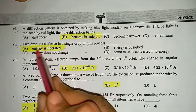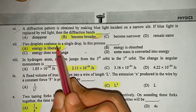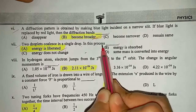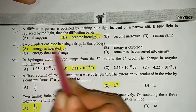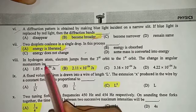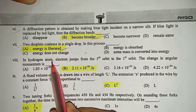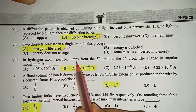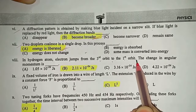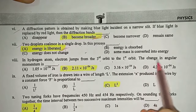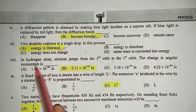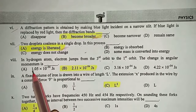Seventh: two droplets coalesce into a single drop — in this process the energy is liberated. Eighth: in a hydrogen atom, an electron jumps from the third orbit to the first orbit. The change in angular momentum — options are: A. 1.05×10⁻³⁴, B. 2.11×10⁻³⁴, C. 3.16×10⁻³⁴, D. 4.22×10⁻³⁴ joule second.